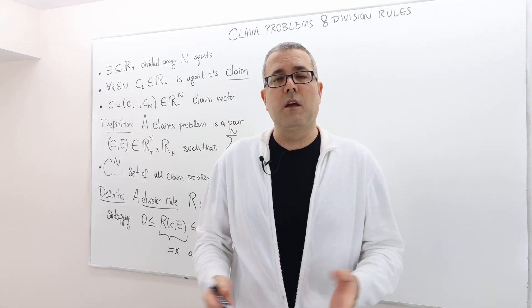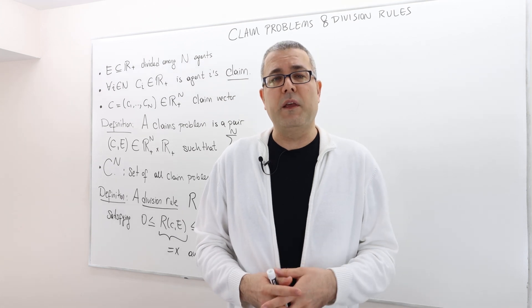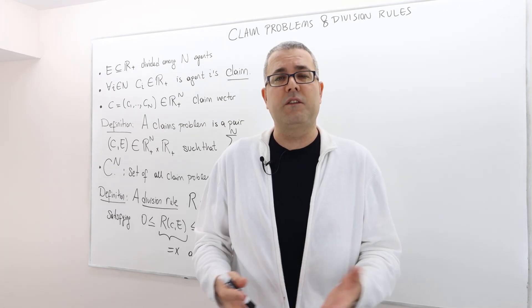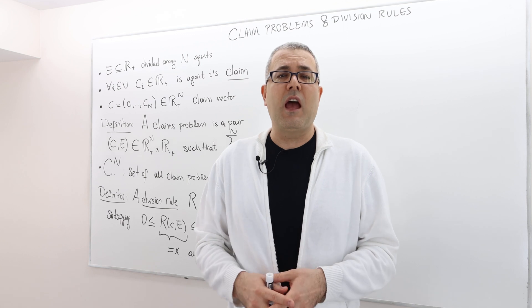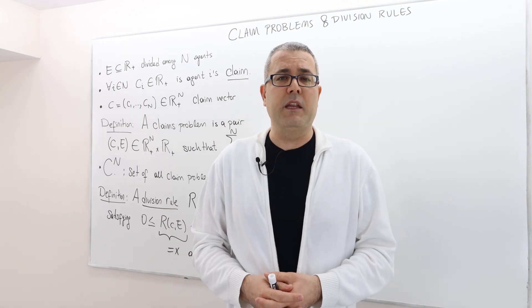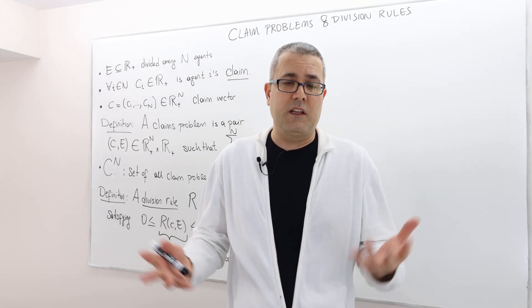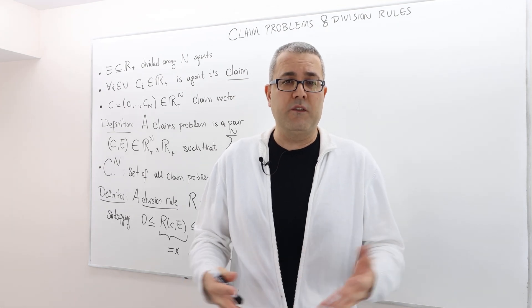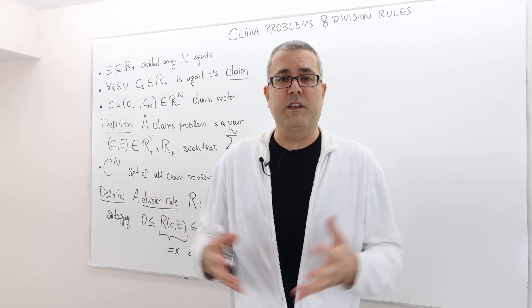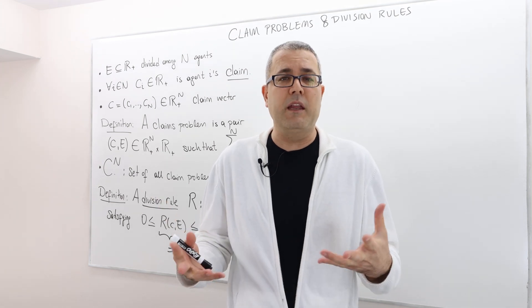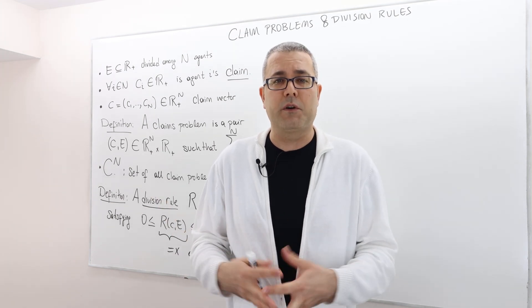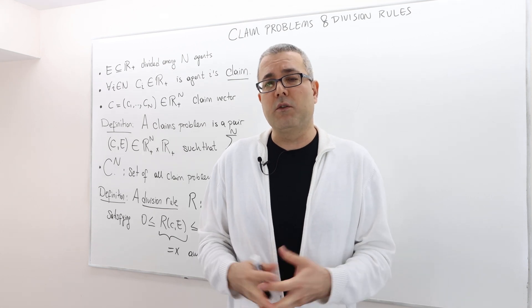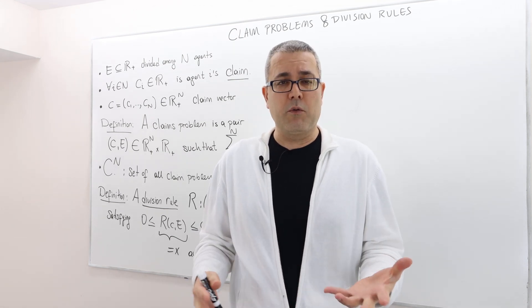So what we do, we liquidate the firm. Basically, we sell all our assets and pay our debts. And then we look at the remaining money, whatever that is. So let's suppose this is some positive amount. And then we need to split this because all the debts are already paid. So the remaining positive surplus is ours, you and I. Then the question is, how are we going to split this?